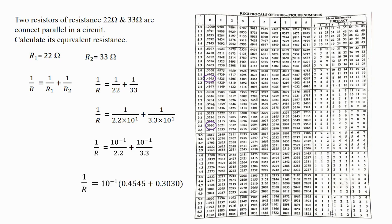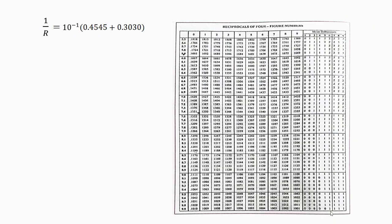Substituting the values: 1 upon R = 10 raised to minus 1 in bracket (0.4545 plus 0.3030). Adding these reciprocal values gives 0.7575 into 10 raised to minus 1. Multiplying 10 raised to minus 1 gives the value 0.07575. Now my requirement is R — the equivalent resistance — so I have to find the reciprocal of 0.07575.